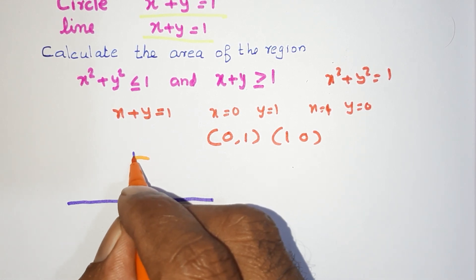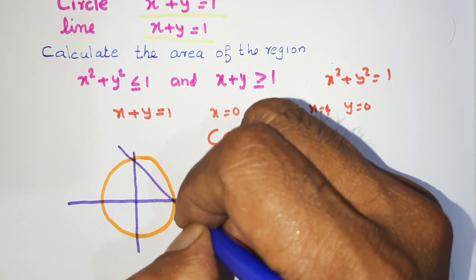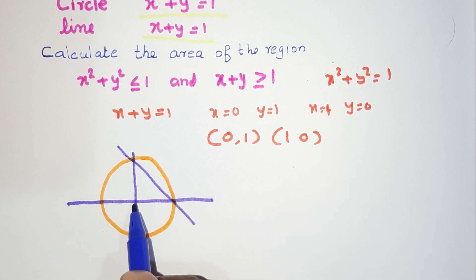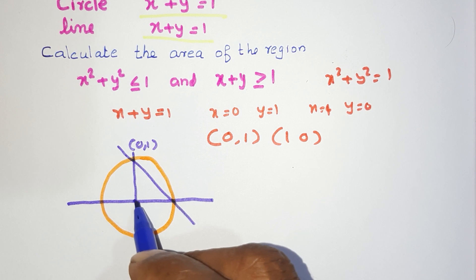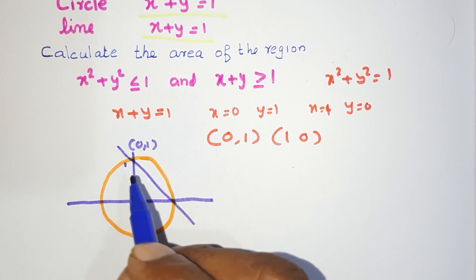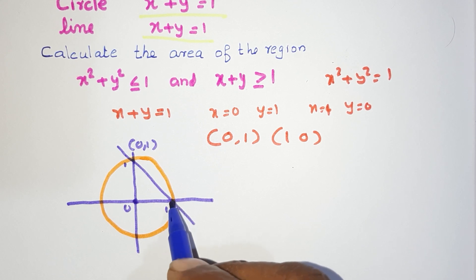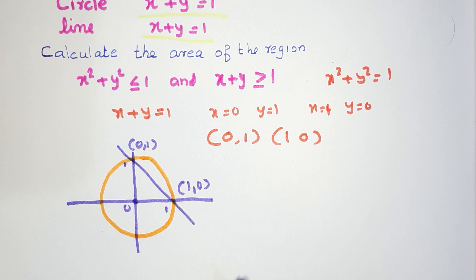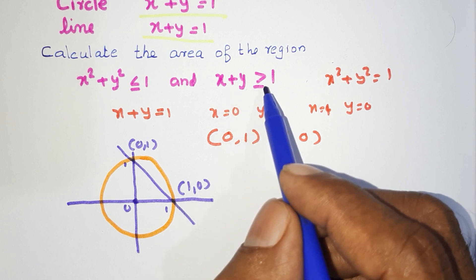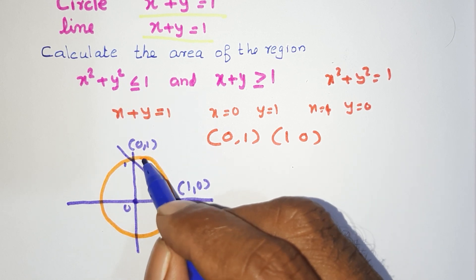One circle, one line — draw them. The points of intersection are (0, 1) and (1, 0). The region where x plus y is less than or equal to 1, and x squared plus y squared is equal to 1 — this is the common region.